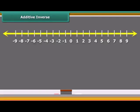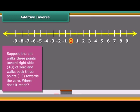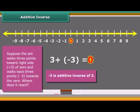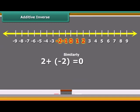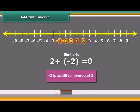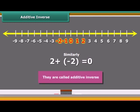Now we will learn additive inverse. Suppose the ant walks three points from 0 to the right side and walks back three points. Where does it reach ultimately? You can see that it will reach to 0. We add 2 and minus 2, we obtain the sum as 0. Numbers such as 3 and minus 3, 2 and minus 2, when added to each other, give the sum 0. They are called additive inverse.